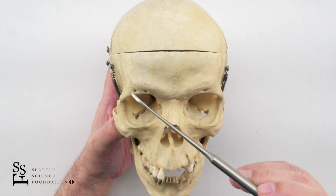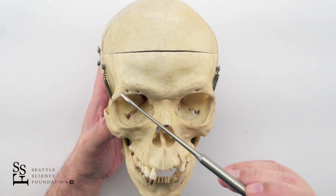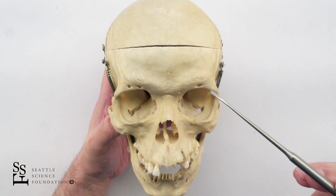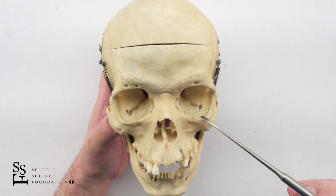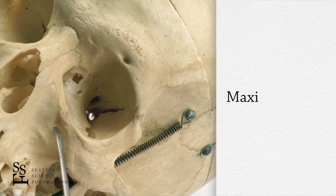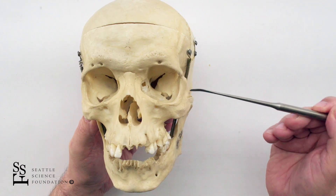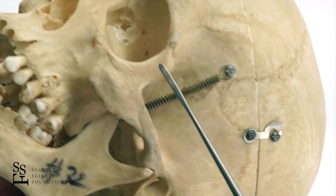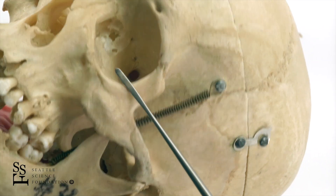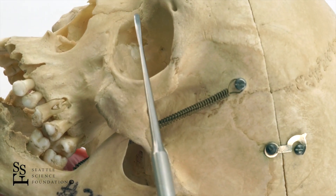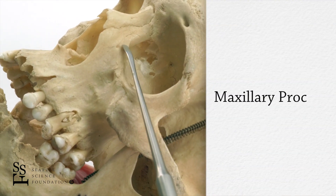We see the supraorbital rim. This inferior aspect of the orbit is part of our maxillary bone. The lateral aspect of this outer orbit is the zygomatic bone, and then we see an extension of the maxillary bone here — the maxillary process.